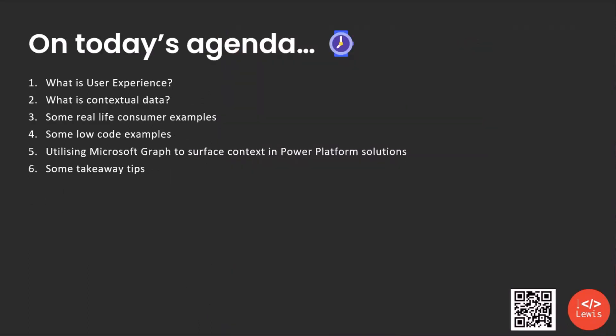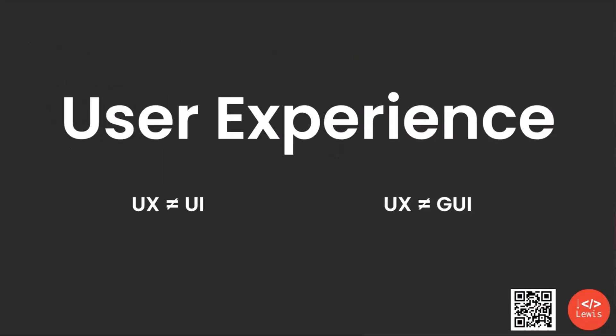Today we're going to take a little look at what user experience is. We're going to take a look at what contextual data is, some real-life consumer examples of contextual data — the stuff that you might see on your phone or that you use on a daily basis — some of the new stuff coming out from vendors. We'll take a look at some low-code examples that I've built, then using Microsoft Graph to surface context in Power Platform solutions, and I'll give you some takeaway tips.